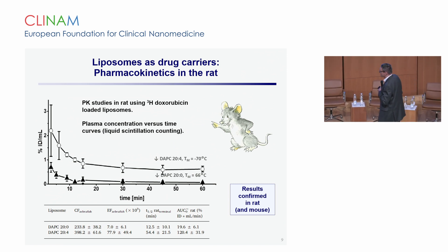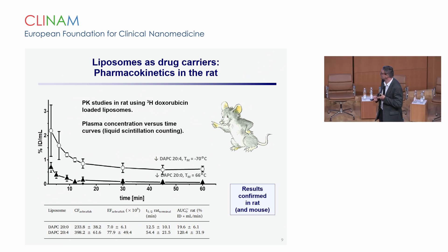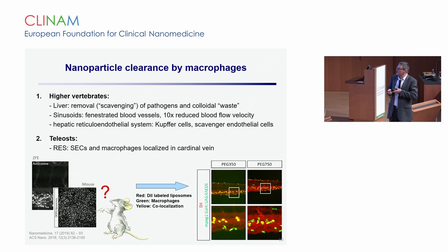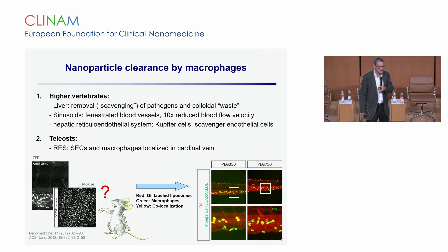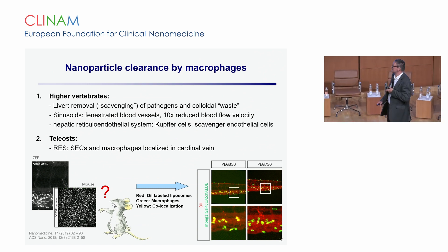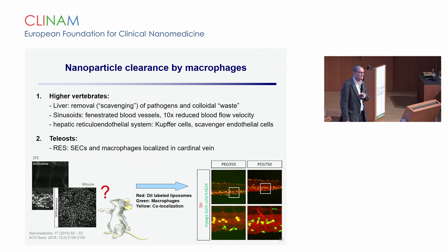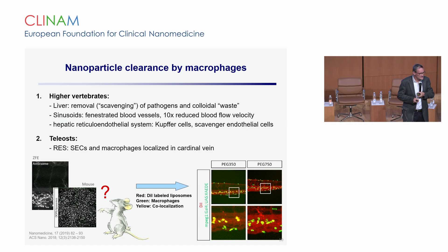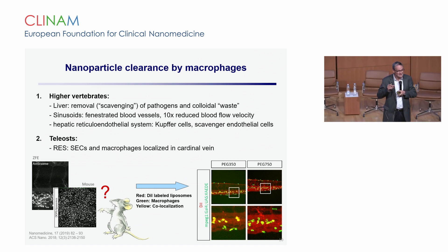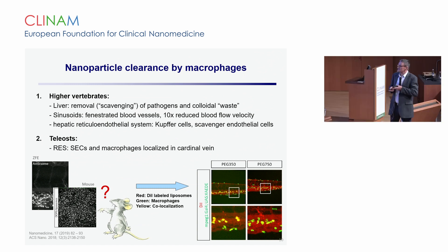The differences in T-half and AUC are more than five-fold between the two liposomal preparations. Nanoparticulate systems have a tendency to be taken up by cells of the reticuloendothelial system — tissue-resident macrophages or scavenger endothelial cells. In higher vertebrates, these cells are located in the liver sinusoids, comprising Kupffer cells and scavenger endothelial cells. In the teleost, these cells of the reticuloendothelial system are located in the tail region in the cardinal vein, leading to accumulation of nanoparticles there upon cellular uptake.